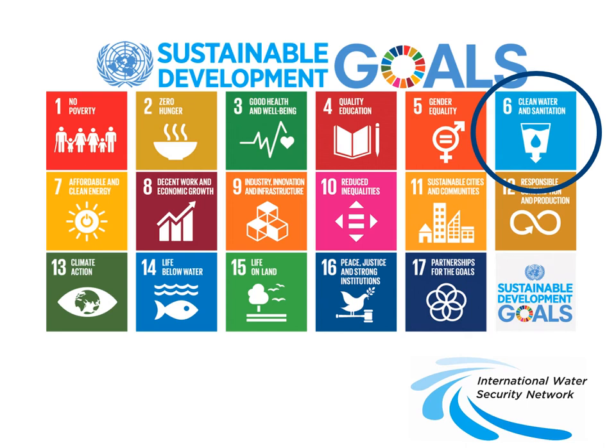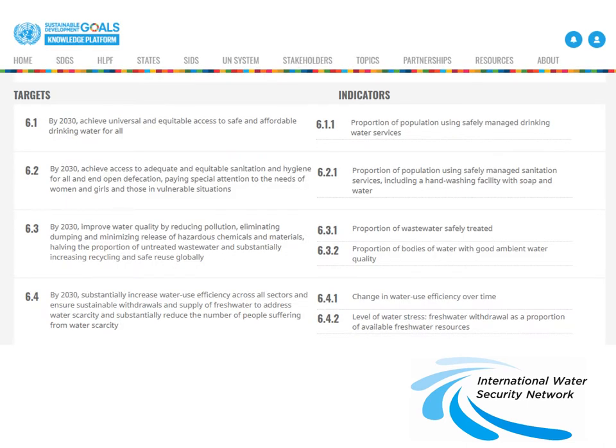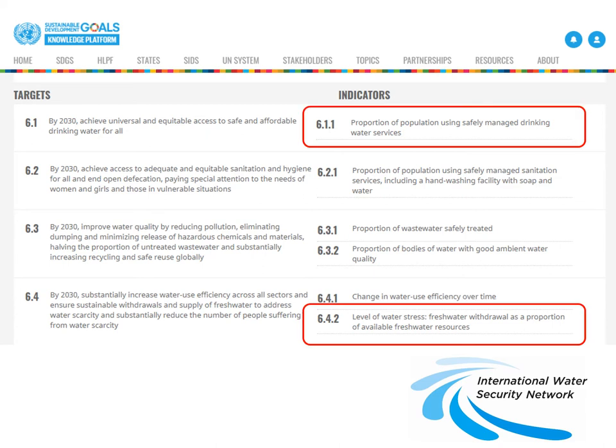SDG 6 includes targets around achieving clean water and improved access to water supply, but also better water management and better sanitation services. Looking inside SDG 6, there are a number of targets, 6.1 to 6.4, and indicators by which we'll know we're moving towards those targets, including 6.1.1 — the proportion of the population using safely managed drinking water services. In fact, 6.1.1 and 6.4.2 tend to be the two key indicators that my team focuses on.